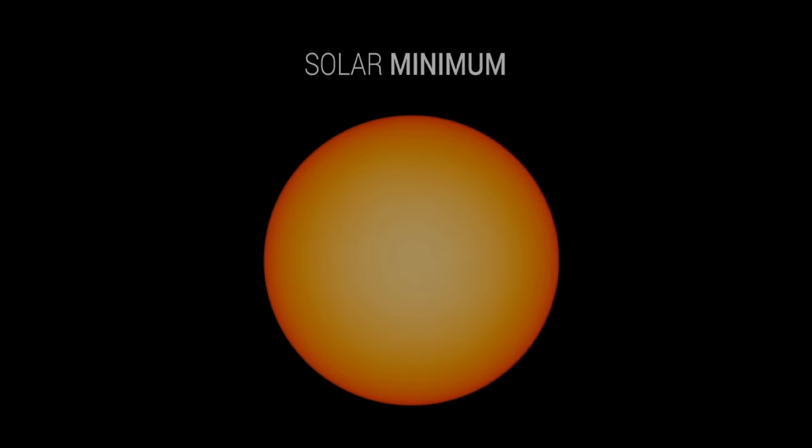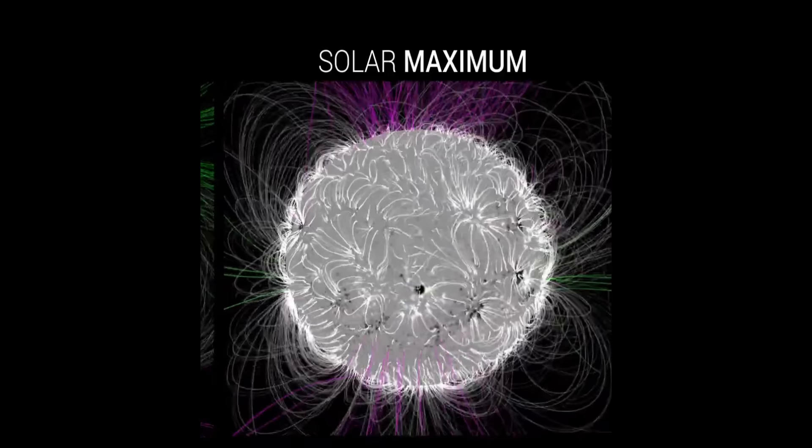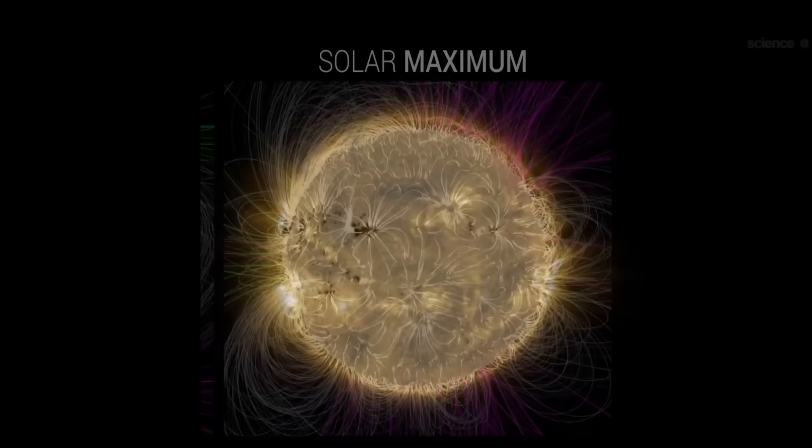During solar cycle minimum, when almost no sunspots are observed on the sun, the dipole field strength is maximum. When the sunspot cycle starts rising, the large-scale solar dipole field starts weakening and assumes more complex configuration. The dipole field vanishes during sunspot cycle peak, and following this, it flips its direction and starts growing slowly again.